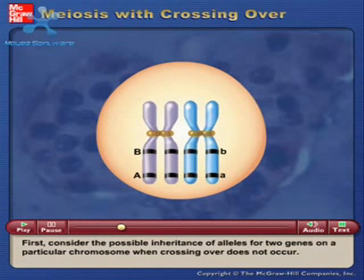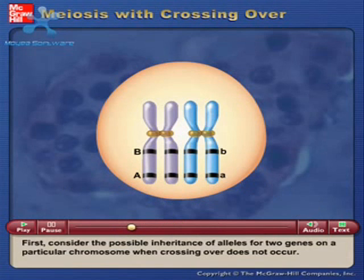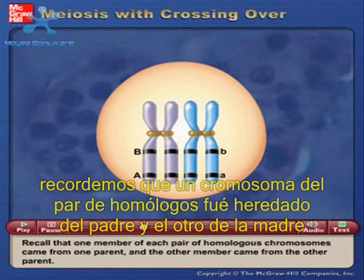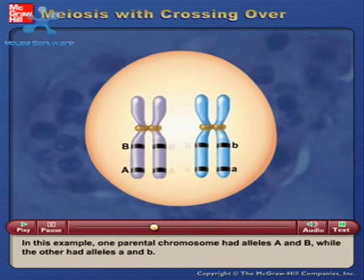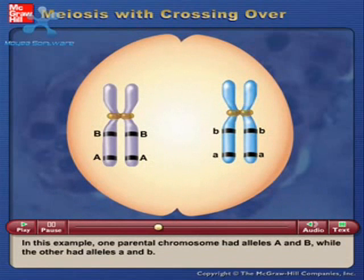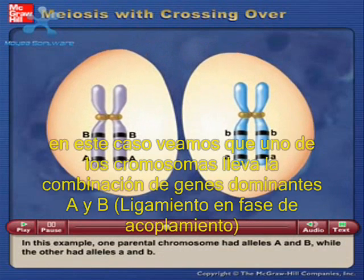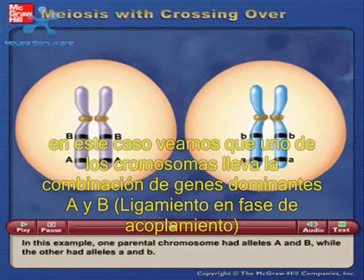First, consider the possible inheritance of alleles for two genes on a particular chromosome when crossing over does not occur. Recall that one member of each pair of homologous chromosomes came from one parent, and the other member came from the other parent. In this example, one parental chromosome had alleles capital A and capital B, while the other had alleles lowercase a and lowercase b.